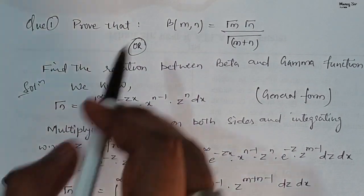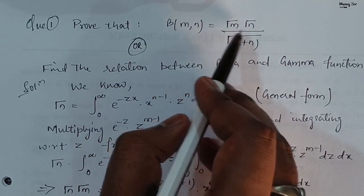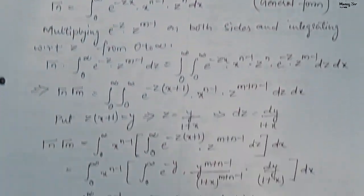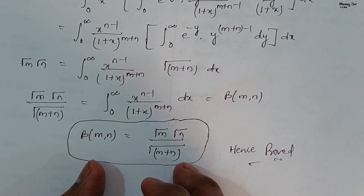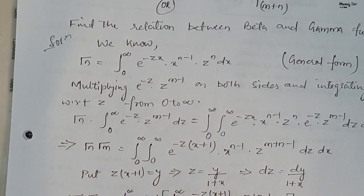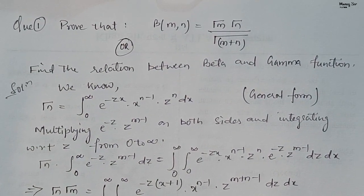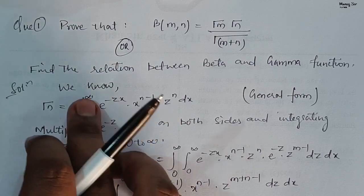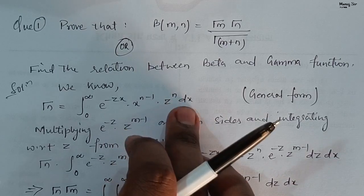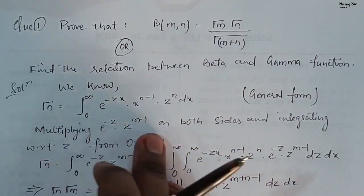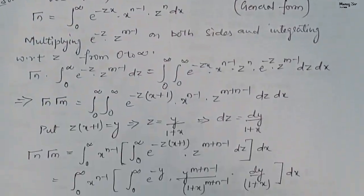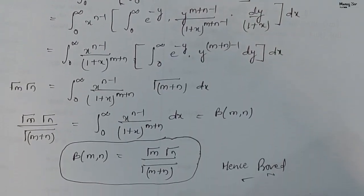To summarize the method: start with the general formula of gamma function, that is gamma of n equals integration from 0 to infinity of e to the minus zx into x to the power n minus 1 into z power n dx. Then multiply and integrate with respect to z with limit 0 to infinity, proceed simply, and you will get the desired result.